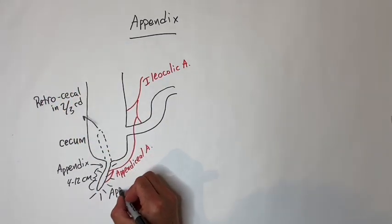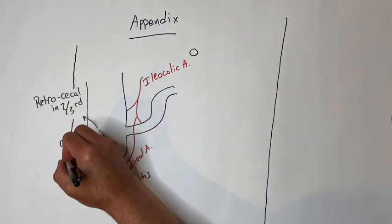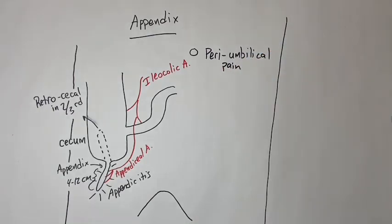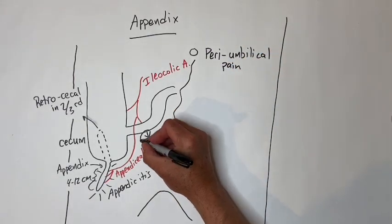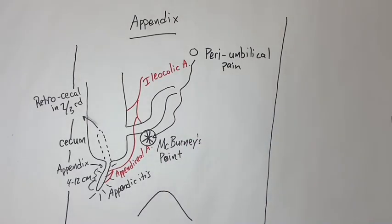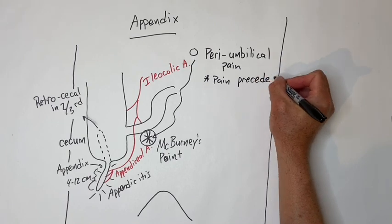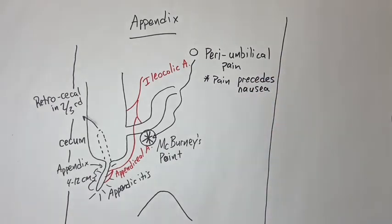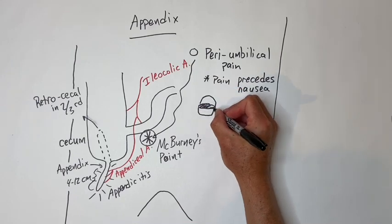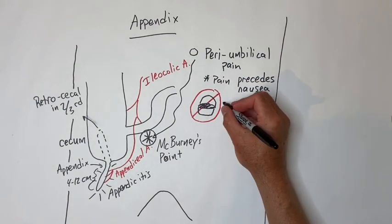Appendicitis is the inflammation of the appendix. The most common symptoms are pain initially around the umbilicus, then it can migrate to the right lower quadrant to McBurney's point, which is one-third of the way between the anterior superior iliac spine and the umbilicus. Pain usually precedes nausea. Patients usually don't want to eat, so if you ask a kid if they want a hamburger and they say no, that is sometimes called the hamburger sign.